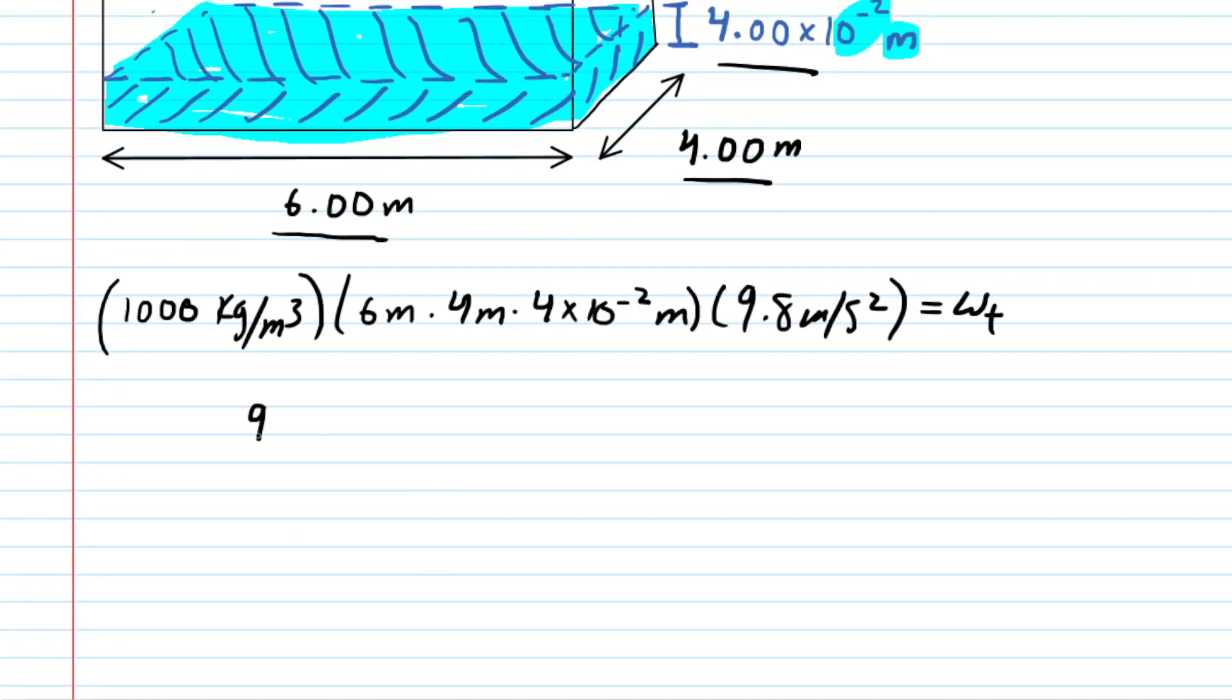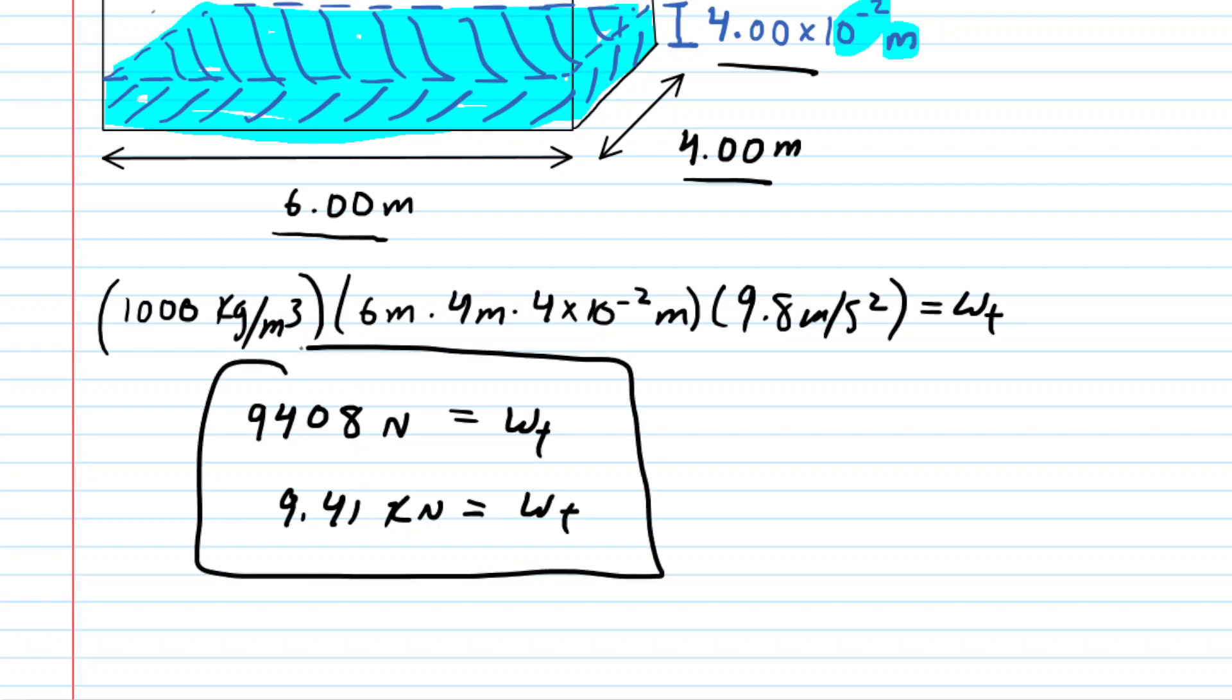9,408 newtons would be the weight of the truck. If your homework system wants this in kilonewtons, go ahead and divide by a thousand, and you would get approximately 9.41 kilonewtons. So either one of these would be correct for the weight of the truck.